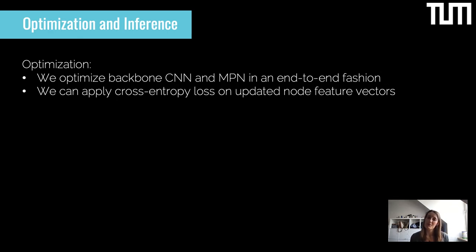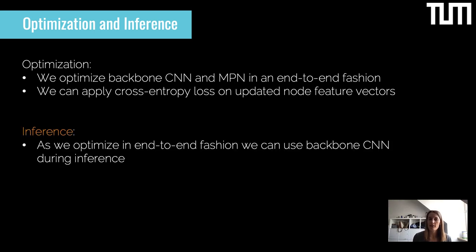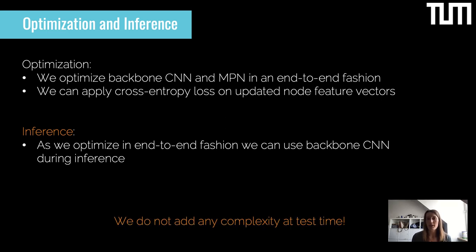During optimization we optimize our backbone CNN and our MPN in an end-to-end fashion. We can simply use cross-entropy loss without any advanced triplet or contrastive loss requiring careful pair or triplet sampling, because we already took the relations in the mini-batch into account during our message passing steps. During inference we can just use the features after the backbone CNN, so we don't add any complexity at test time.